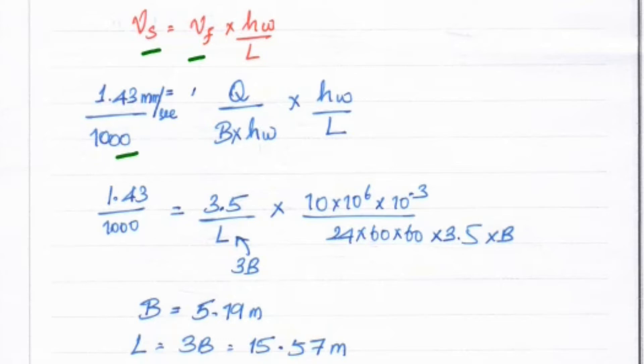Then Q/(B × Hw) × Hw/L. So Vf = Q/(B × Hw), then Hw/L. The Hw is given as 3.5, and length equals 3 times breadth, so L = 3B.